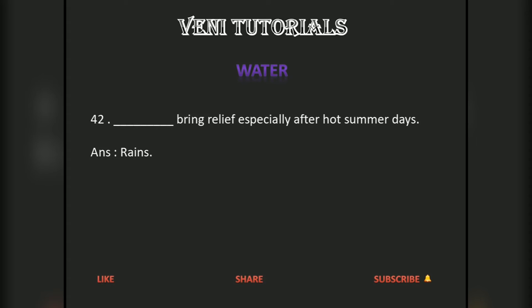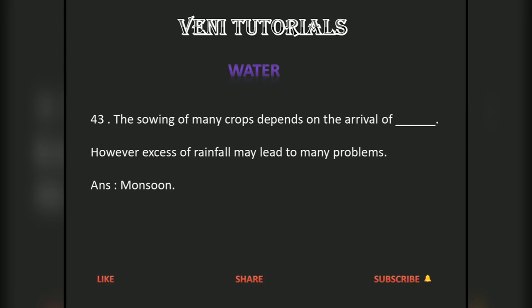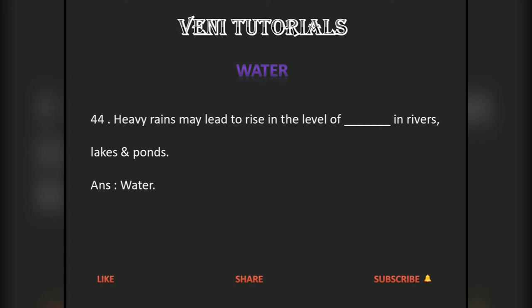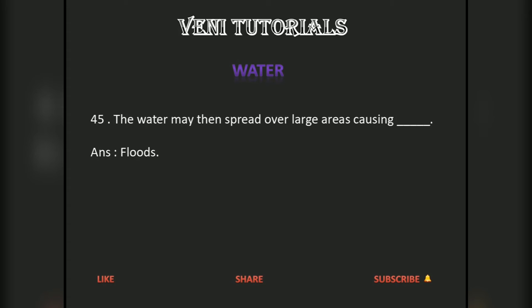Rains bring relief, especially after hot summer days. The sowing of many crops depends on the arrival of the monsoon. However, excess of rainfall may lead to many problems. Heavy rains may lead to a rise in the level of water in rivers, lakes, and ponds. The water may then spread over large areas, causing floods.